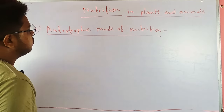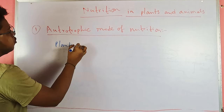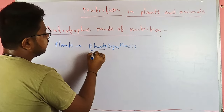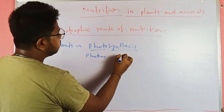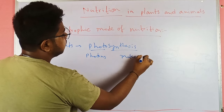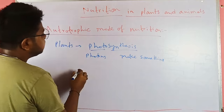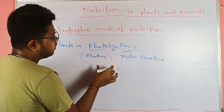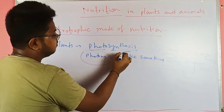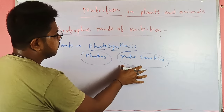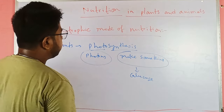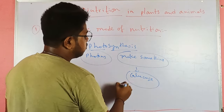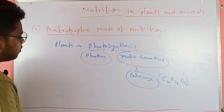Plants do photosynthesis — 'photo' means photons and 'synthesis' means to make something. Using the energy of photons coming from the sun, plants convert that energy into chemical energy and produce glucose (C6H12O6) as the main product of photosynthesis.